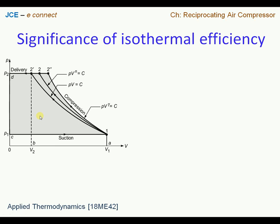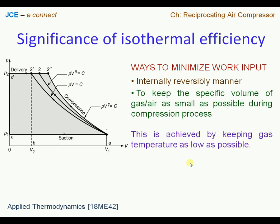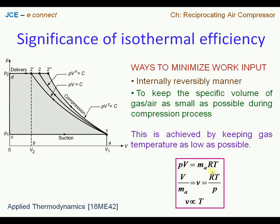One possibility to minimize work input is to compress the working fluid by eliminating all irreversibilities associated with the process. The second possibility is to reduce the specific volume. If you drop a perpendicular to the x-axis — where the x-axis represents V, that is volume per unit mass, signifying specific volume — reduction in specific volume gives us an idea that the area under the curve is becoming lesser, reflecting reduced work input for the compressor.